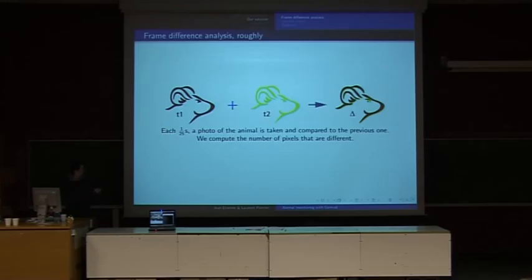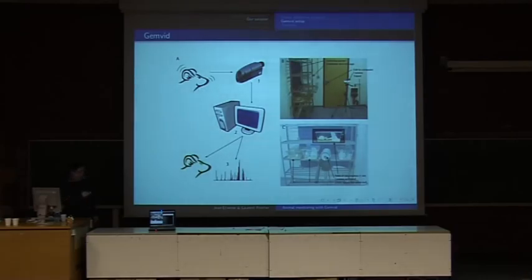Roughly the principle we use is the frame difference analysis. If you take a rat at one time and take a picture of it, and then at the second time you take another picture, every 1/25th of a second, you can compare the two images and compute the number of pixels that are different, here in green. The setup is the following: you have your rat, a camera, a computer that analyzes the images, and then you have two displays. At the first row you can see it more clearly. If I move my fingers you have some green pixels showing. After that you can analyze the output with a general graph.